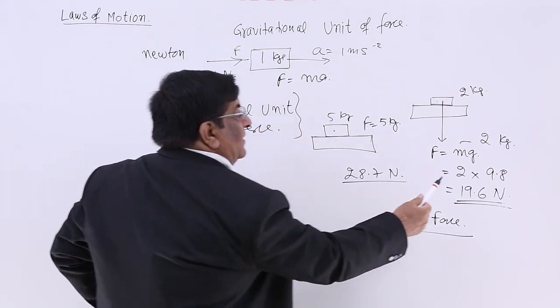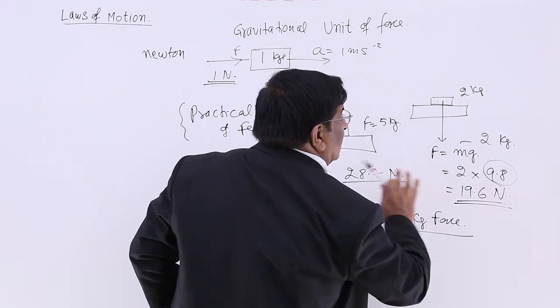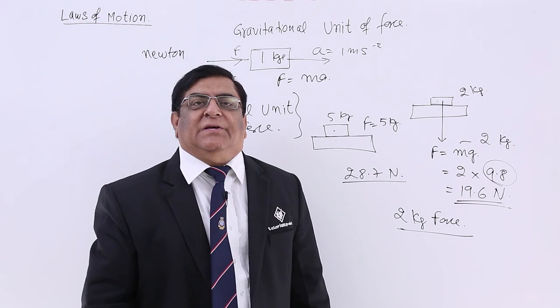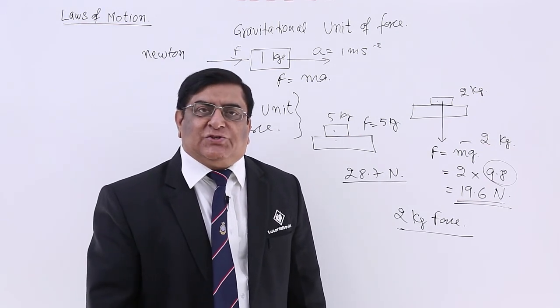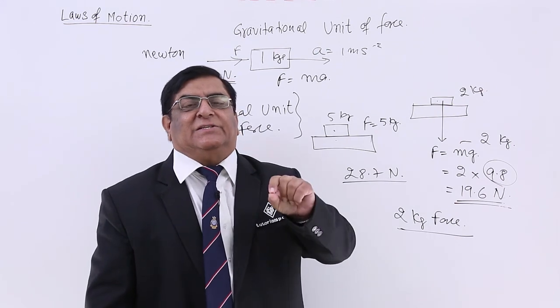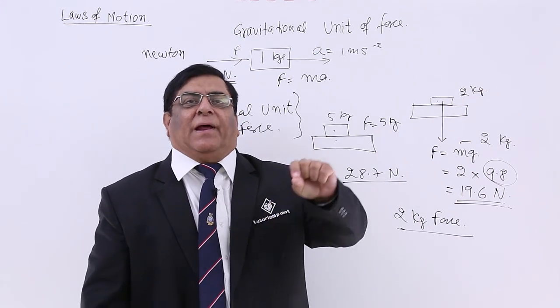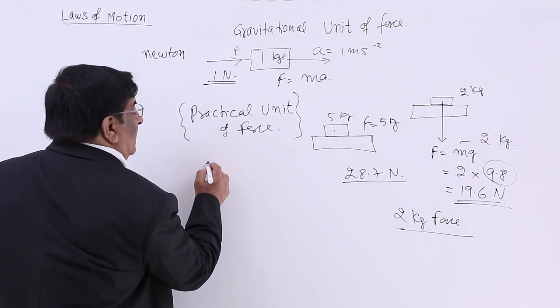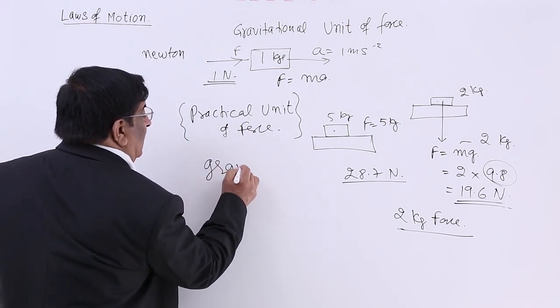Because we are using here gravitational acceleration in all the cases, if I tell you the force is 50 kg, you will understand that in SI method this force is 50 multiplied by g. So we will call it gravitational unit.